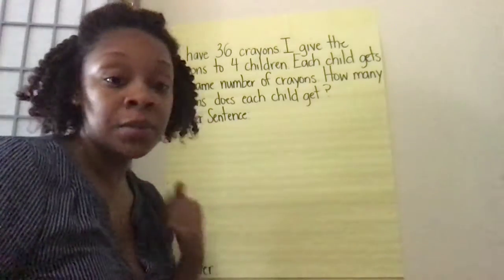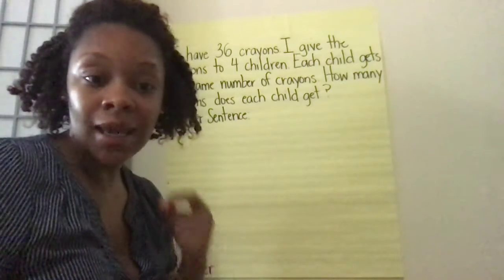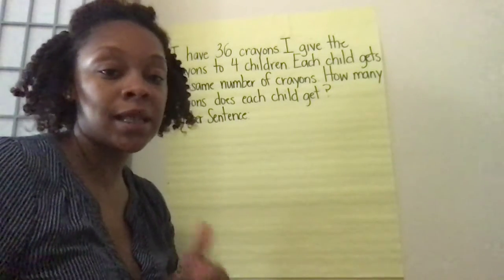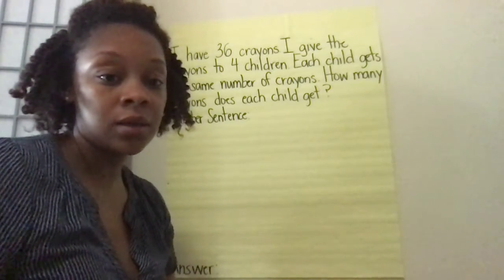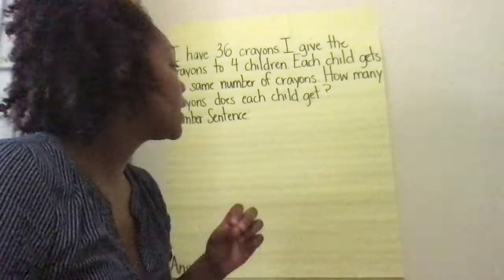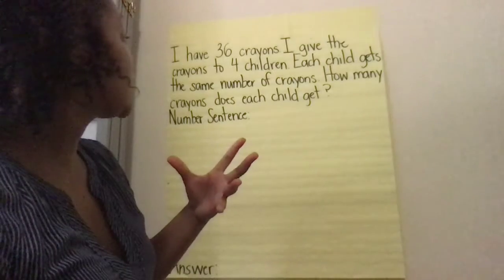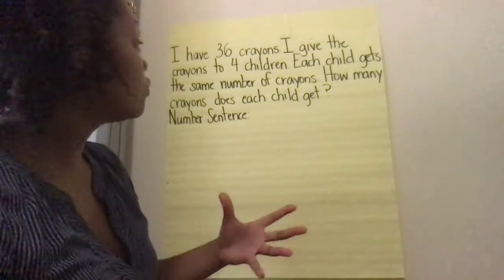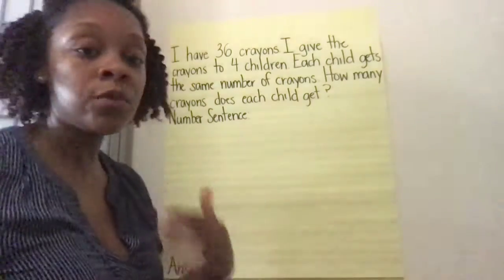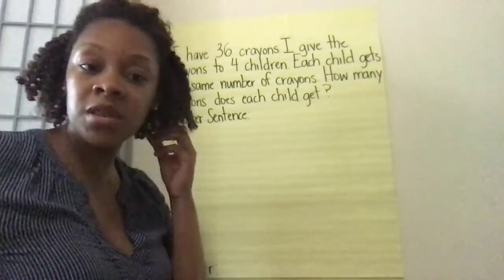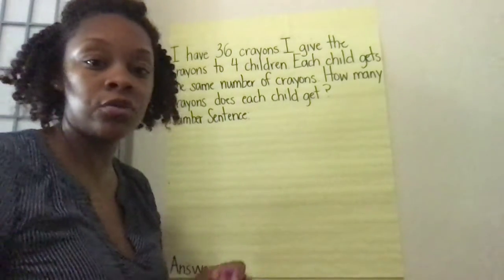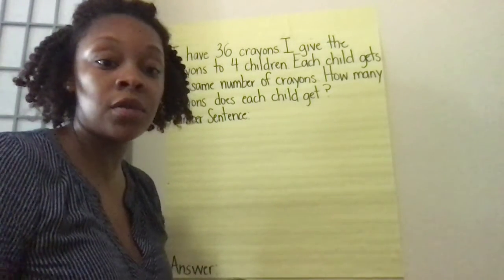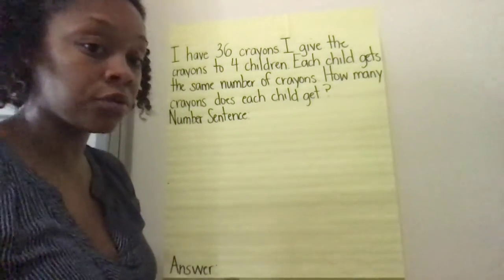This is absolutely an equal groups problem, just like last week. The way I know it's an equal groups problem is because they tell us our groups. So now when we're reading, I want you to be thinking about: what are our groups? Are the crayons our groups or are the children our groups?